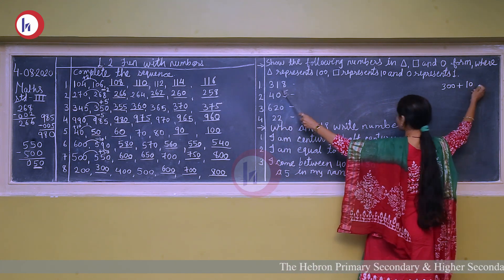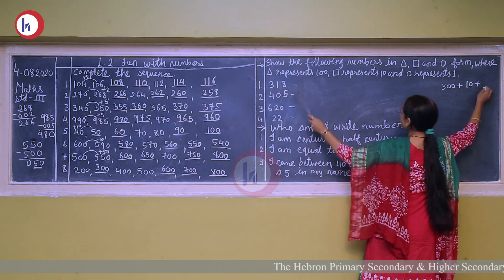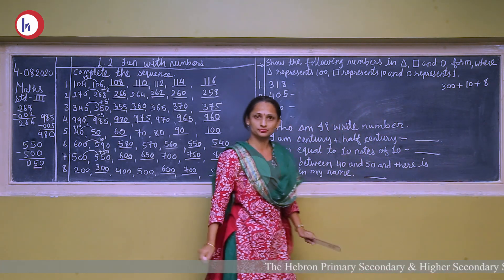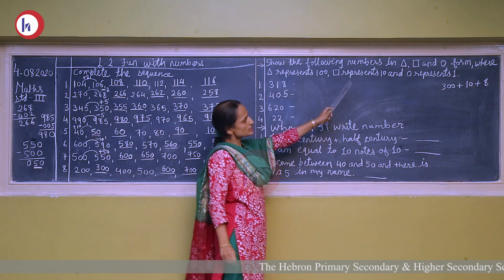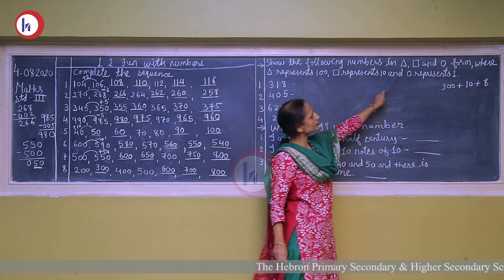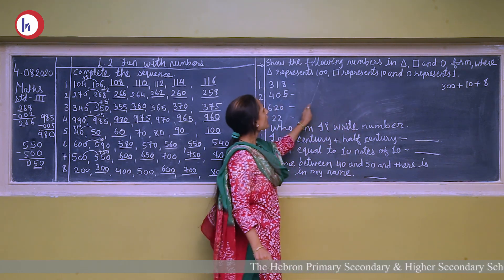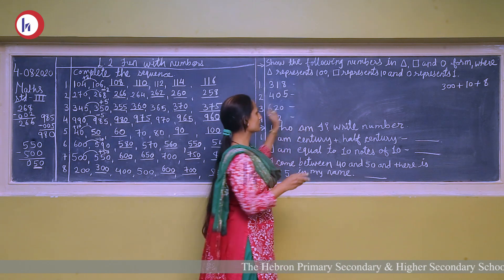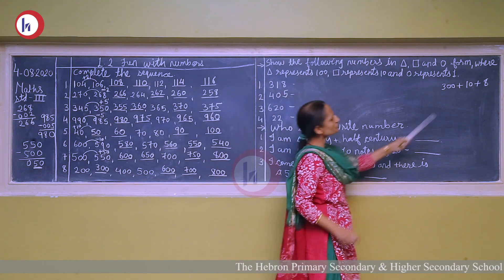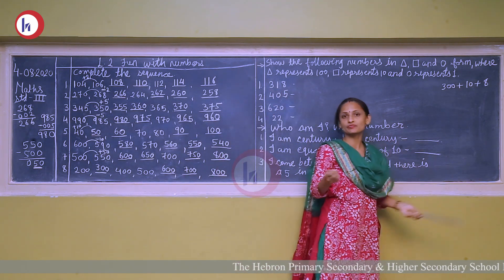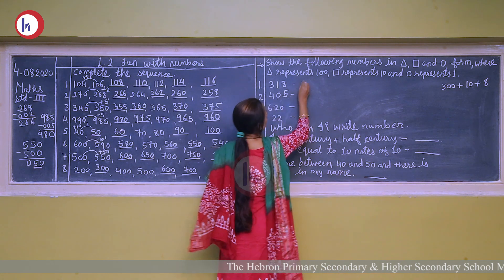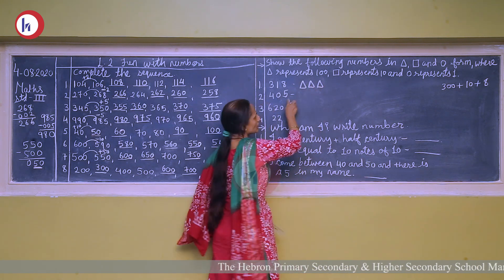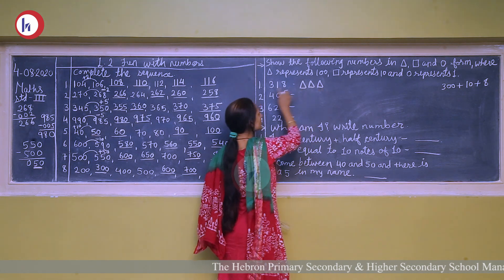Now we will write in shape form. One triangle represents one hundred. So here we want three hundred — we will draw three triangles: one, two, three. That gives us one hundred, two hundred, three hundred.